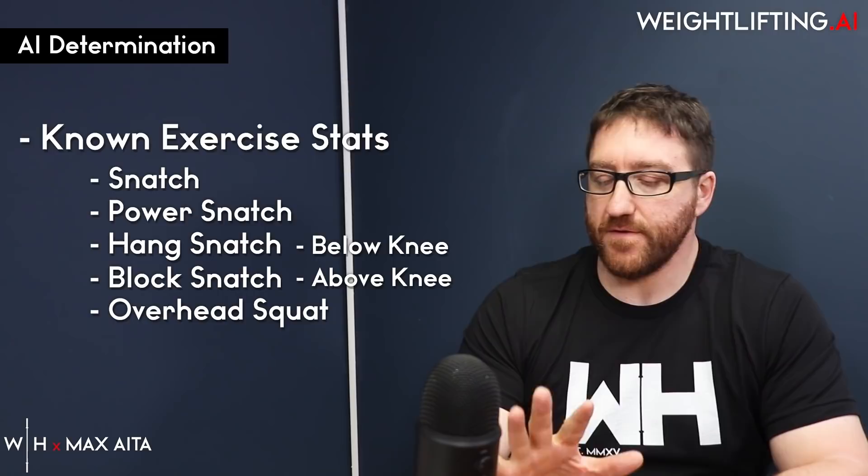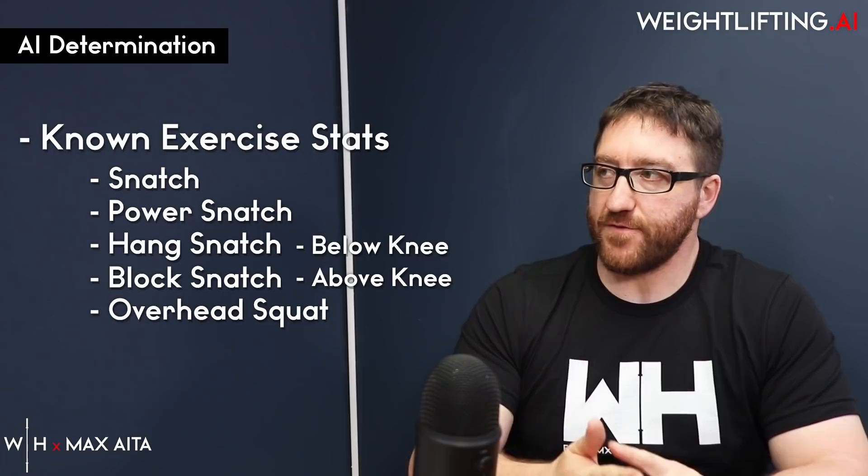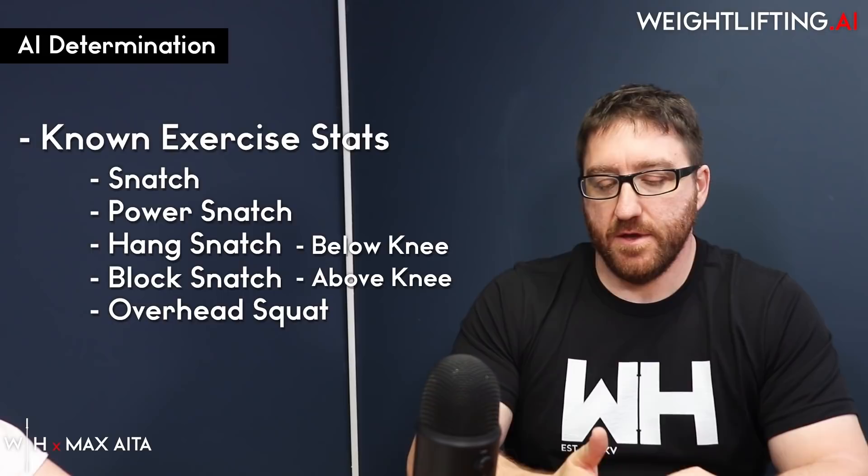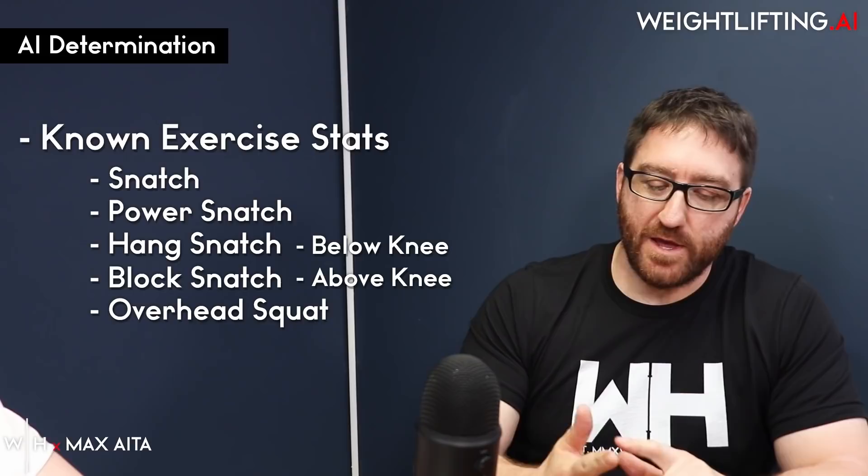The main way the AI determines what exercises to do — outside of phases like hypertrophy, strength, and peaking — is a decomposition of all your lifting variables. So all the exercises you know: snatch, power snatch, hang snatch, block snatch, hang snatch from below the knee, block snatch from above the knee, and overhead squat. Those five highest correlated exercises are unique because each has a significant impact on one or more of the seven phases of the lift.